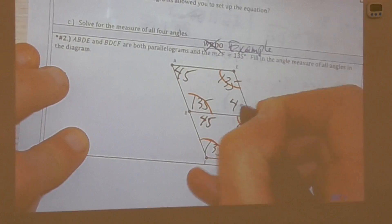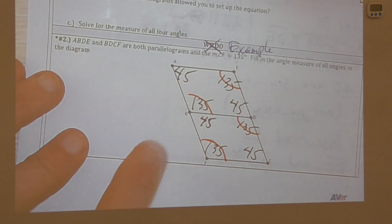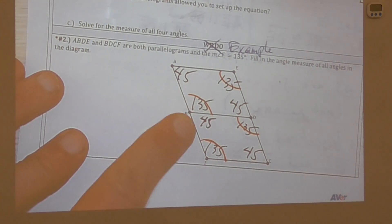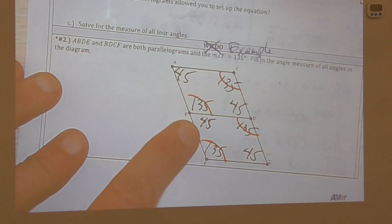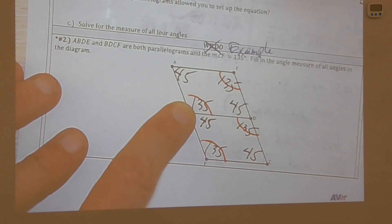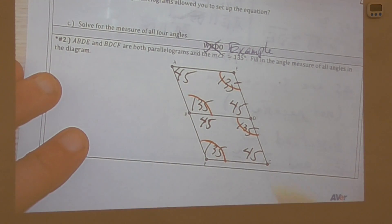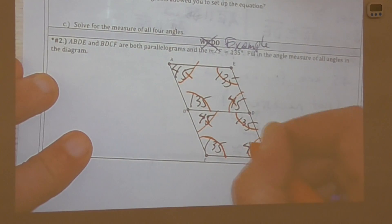Another way to figure that out: we had 45 here and used a linear pair — 45 plus something equals 180 — giving 135. So all angles in the diagram are confirmed.